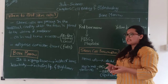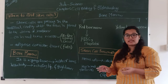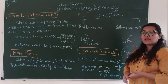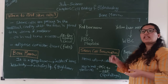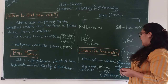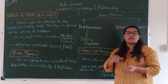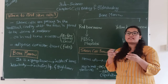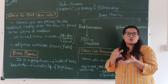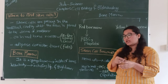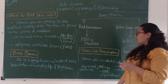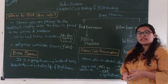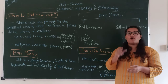Stem cells can be preserved from three main sources: red bone marrow, and from embryos. To keep stem cells, small sterile vials are used as storage instruments, which maintain a temperature of minus 135 degrees Celsius to minus 180 degrees Celsius using liquid nitrogen.